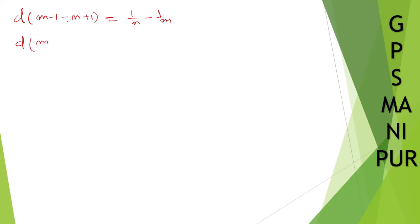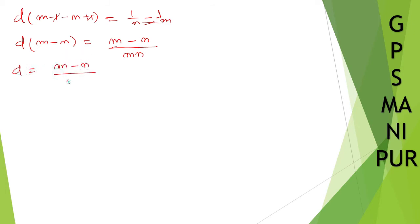So d times (m minus n), since the minus 1 and plus 1 cancel, equals 1/n minus 1/m. Cross multiplying the right side gives (m minus n) divided by mn. So d equals (m minus n)/mn, and since (m minus n) cancels with the numerator, therefore d equals 1/mn. This is equation number 3.